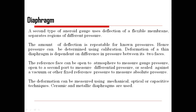A diaphragm is a structure where support is provided on both sides, with an elastic element in between. When a force is applied from the lower side, due to its elasticity, molding or displacement of the diaphragm takes place.